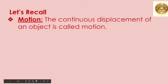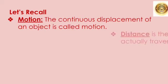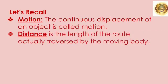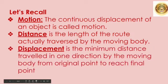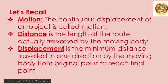We studied about motion. The continuous displacement of an object is called motion. Distance is the length of the route actually traversed by a moving body. Displacement is the minimum distance travelled in one direction by the moving body from the original point to reach the final point.